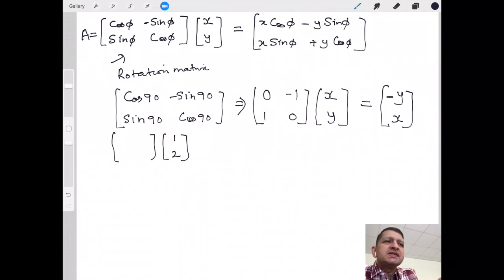And now this is 0, -1, 1, 0. I'm going to multiply this, and as I multiply, this becomes -2 and 1. Graphically, let us see what's going to happen.